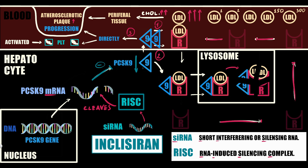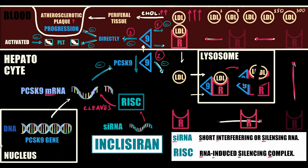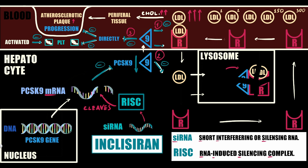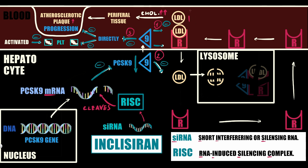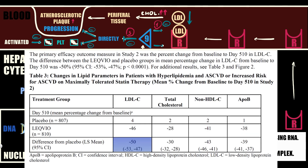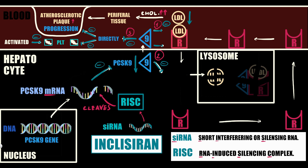With reduced PCSK9, it no longer interacts with LDL receptors extracellularly, no longer exerts direct effects on atherosclerotic plaque formation and thrombocyte activation, and intracellular direct interaction with LDL receptors is also prevented. This restores LDL receptor recycling and therefore LDL cholesterol uptake by hepatocytes, with further lysosomal utilization. As a result, blood LDL levels decrease. According to studies, LDL was decreased by 50% in the Inclisiran group compared to placebo, leading to prevention of atherosclerotic plaque progression.